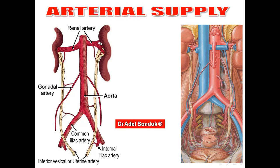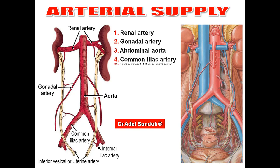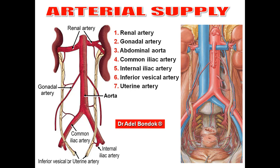The ureter receives arterial supply from many arteries along its course. From above downward: the renal artery, the gonadal artery, the abdominal aorta itself, the common iliac artery, the internal iliac artery, and the inferior vesical or uterine artery in the female.